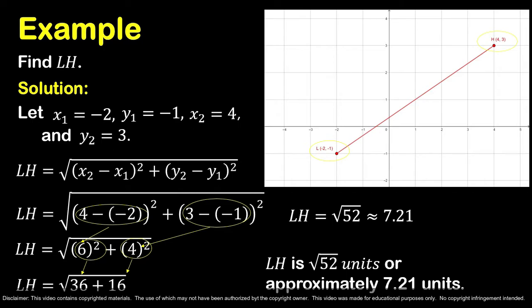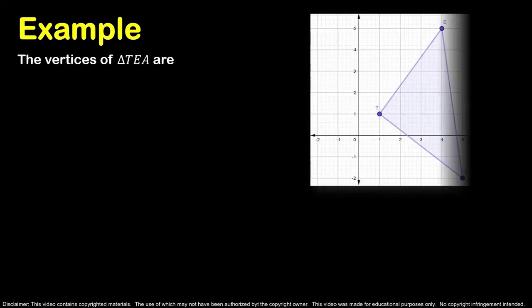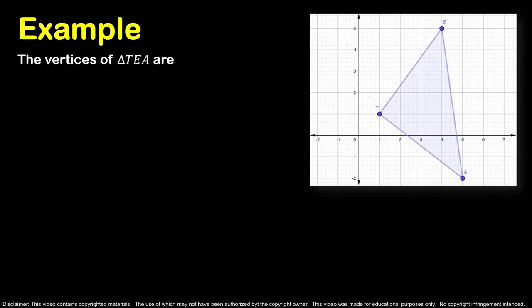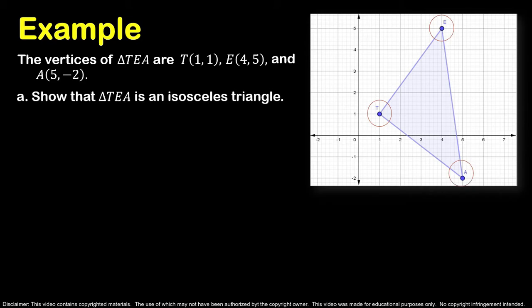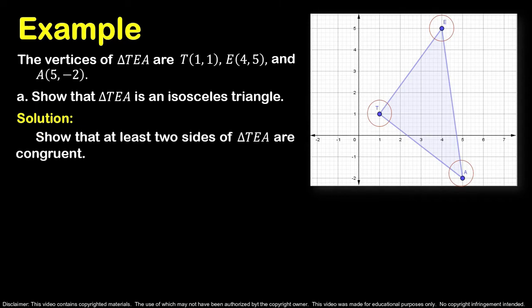Now it's your turn. Try to answer the drill exercise. The vertices of triangle TEA are T(1, 1), E(4, 5), and A(5, 2). First, show that triangle TEA is an isosceles triangle. Recall that an isosceles triangle has at least two congruent sides. Let us show that at least two sides of triangle TEA are congruent. Using the distance formula, let us determine the length of each side.